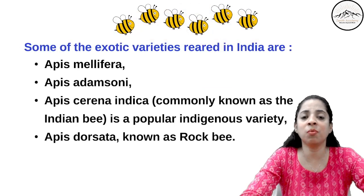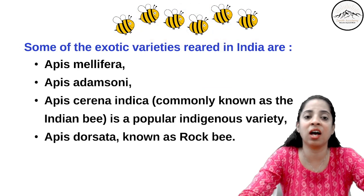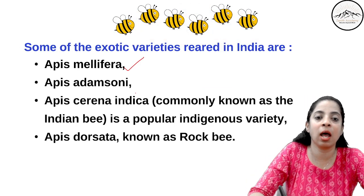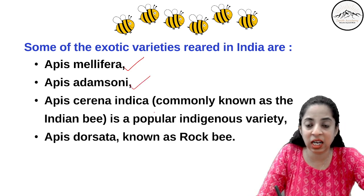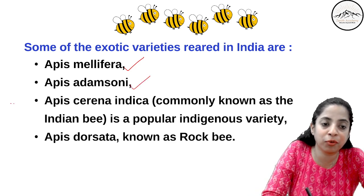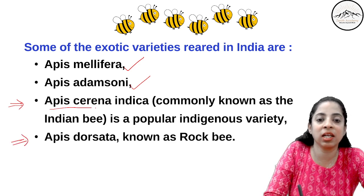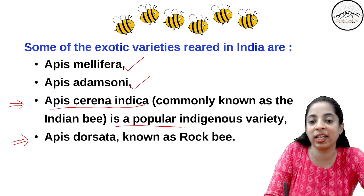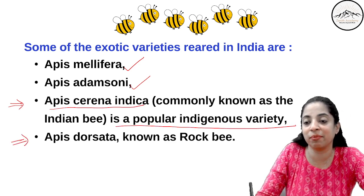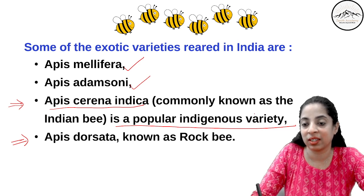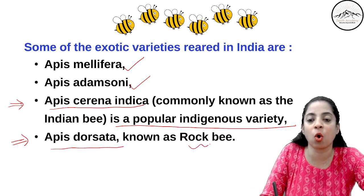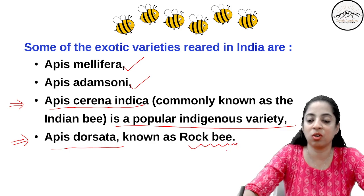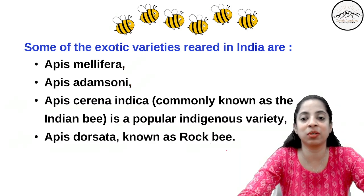Some exotic varieties of bees reared in India are Apis mellifera, Apis adamsoni, and Apis serena indica — these are very important to learn. Apis serena indica is a very popular indigenous or desi variety. Apis dorsata is known as the rock bee. Learn these names, my dear students.